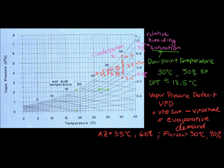So in Arizona, in this situation, you have a greater vapor pressure deficit - a greater difference - which means you're going to have a higher evaporative demand. So evaporation is going at a higher, faster rate than it is in Florida, because there's just not as much of a gradient between saturation and your actual vapor pressure. The larger the gradient, the faster evaporation is going to occur.